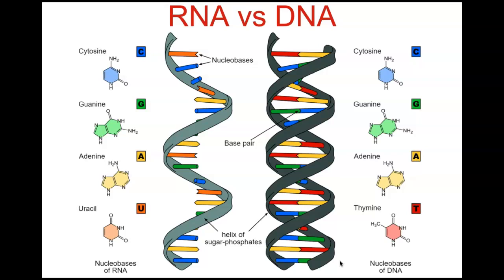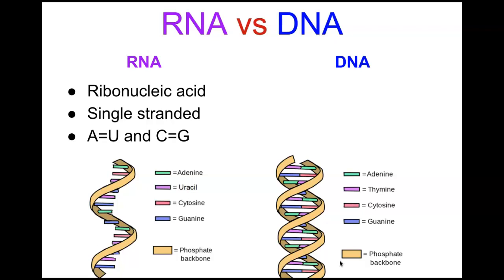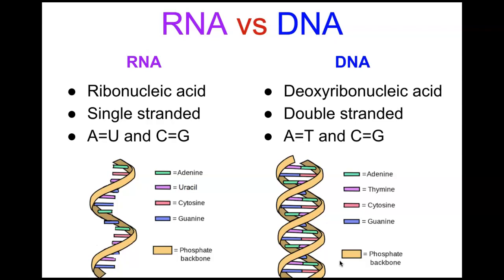Now let's look at RNA, the sister molecule of DNA. RNA — ribonucleic acid — versus DNA — deoxyribonucleic acid: RNA is a single helix instead of a double helix, and instead of thymine it has the nitrogenous base uracil. RNA is single-stranded, with adenine pairing with uracil and cytosine pairing with guanine. DNA is double-stranded, with adenine bonding to thymine and cytosine bonding to guanine.